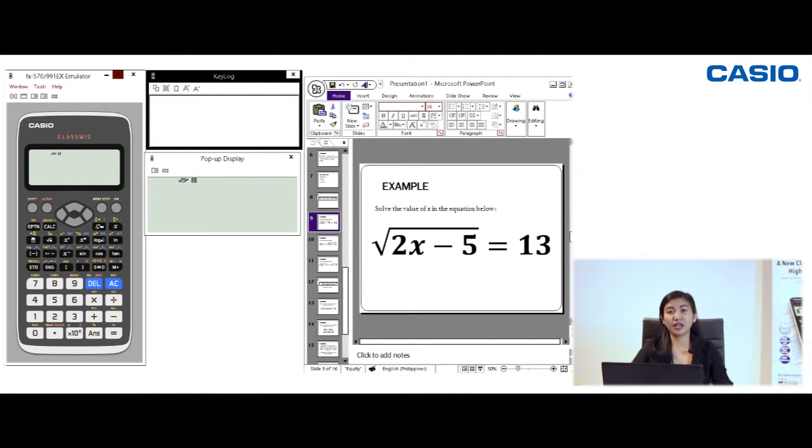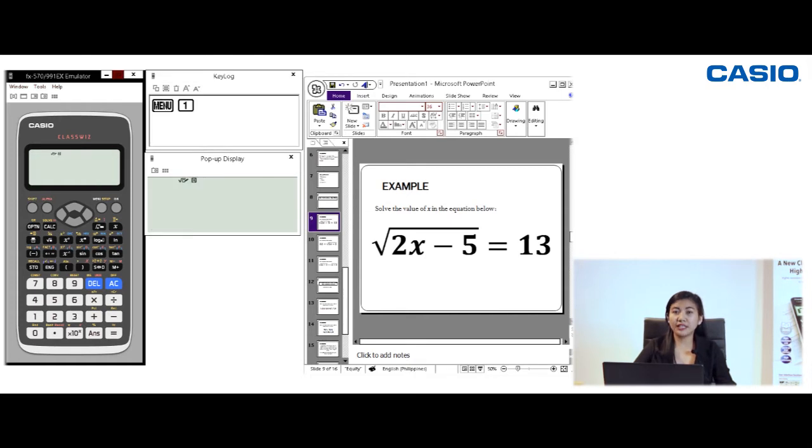So using our Casio ClassWiz 991EX, we have to set this device in the calculation mode. So simply press menu, 1, and then let's enter the equation. So square root of 2x minus 5, then make sure that the equal sign will be outside the radical sign by pressing the right arrow key.